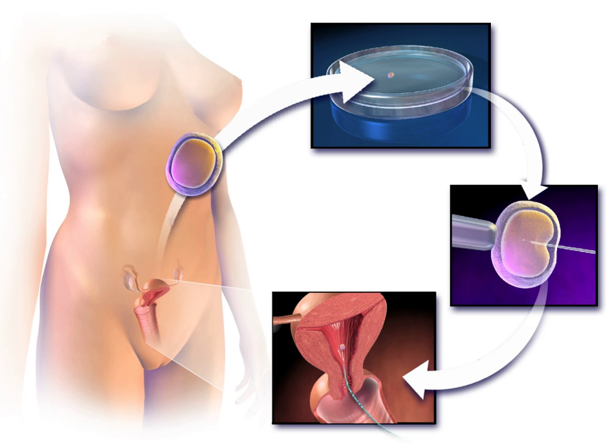Assisted reproductive technology procedures performed in the US have more than doubled over the last 10 years, with 140,000 procedures in 2006 resulting in 55,000 births. In Australia, 3.1% of births are a result of ART. In cases of discontinuation of fertility treatment, the most common reasons have been estimated to include postponement of treatment (39%).